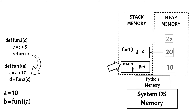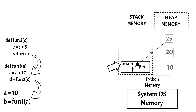Similarly, when the function1 execution is completed, then the function1 stack will no longer be required and it will be removed from the stack memory. Now only the main stack is left. In the main stack, the integer object 25 will be returned to the variable B, and once the code is executed in the main stack, it will no longer be required and the main stack will also be removed. But before that, notice that the value 20 is no longer referenced to any variable in the stack memory. Such values in the heap memory which are not referenced to any variable in the stack memory are known as dead objects.